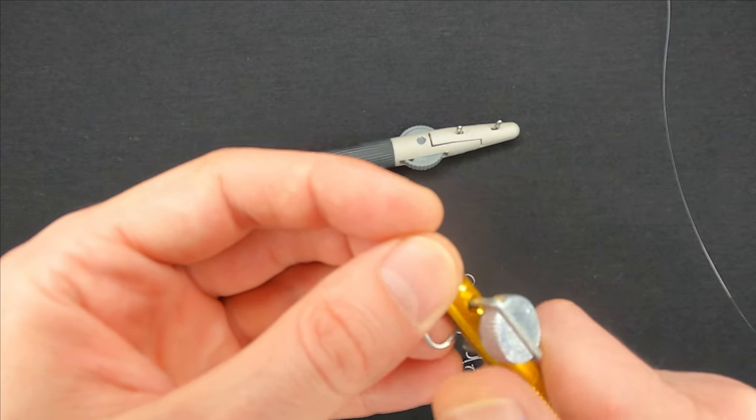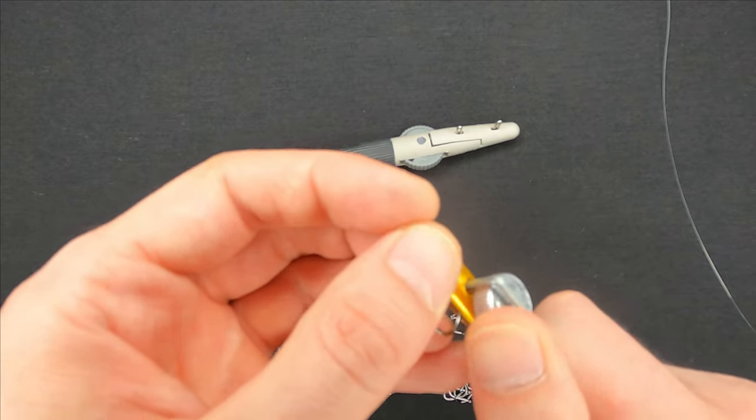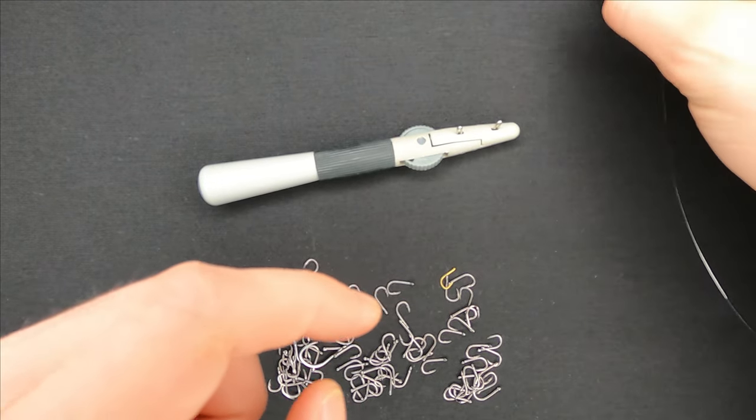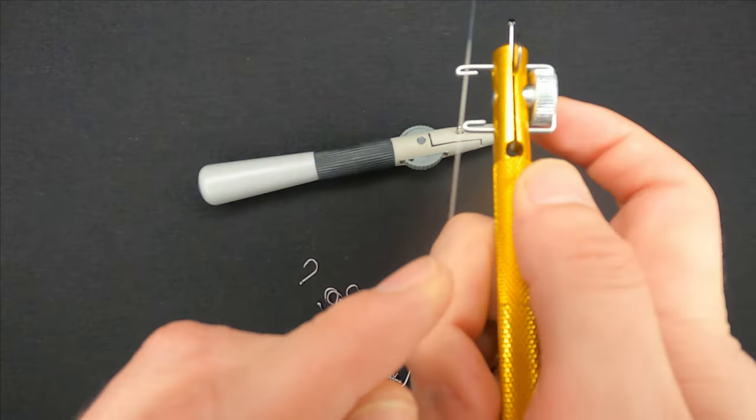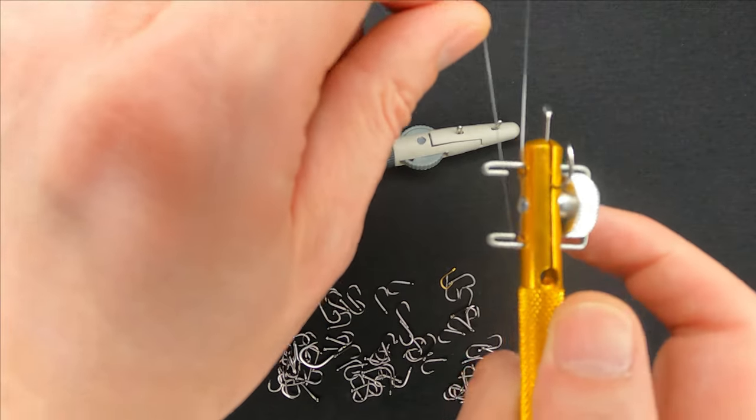Tighten the jaws and make sure that this metal part is set to this position. Wrap the line around these two metal parts starting from the front and start rotating the tool while holding the tag end with your fingers.